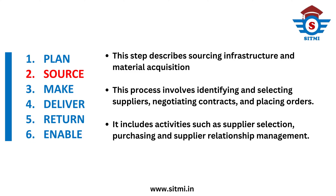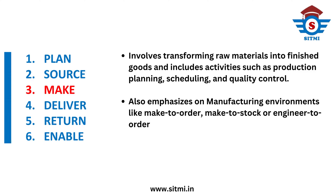The third process is Make. This process involves transforming raw materials into finished goods, and it includes activities like production planning, production scheduling, and quality control. Manufacturing and production are the key aspects of this step. Multiple manufacturing environments are also considered here, such as make-to-order, make-to-stock, and engineer-to-order. It also includes managing the production network, production equipment and facilities, and transportation aspects of production.